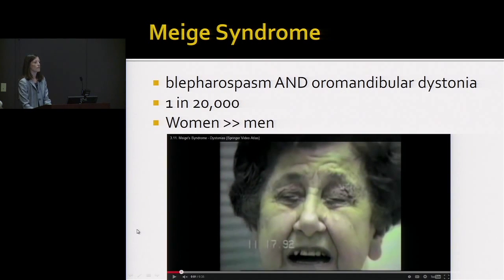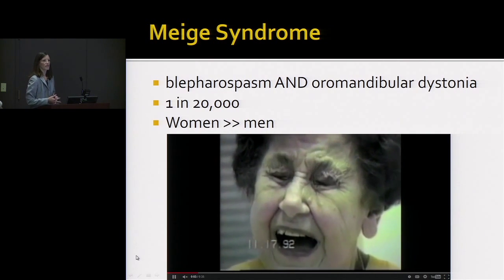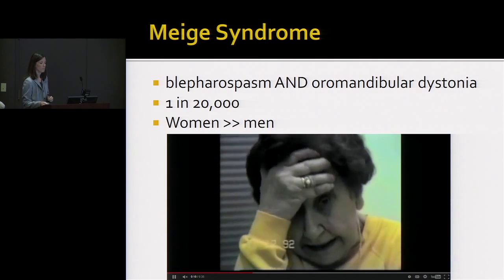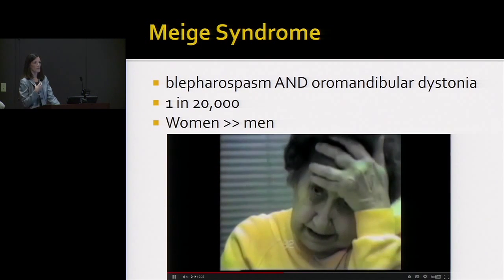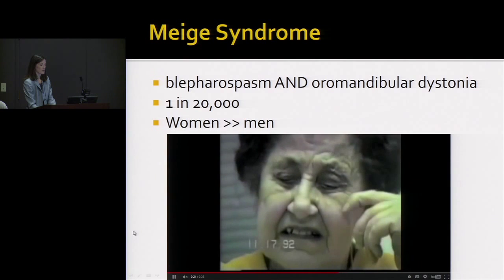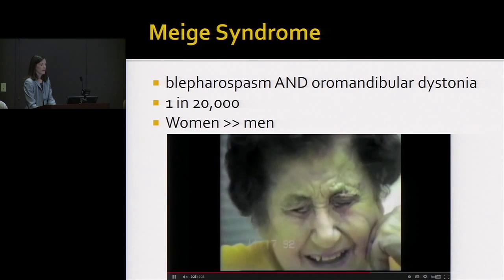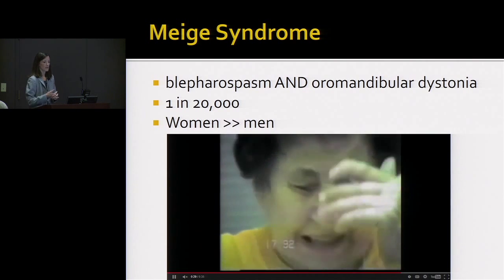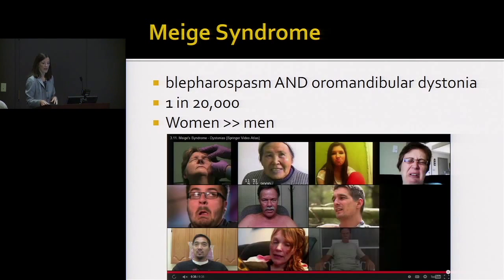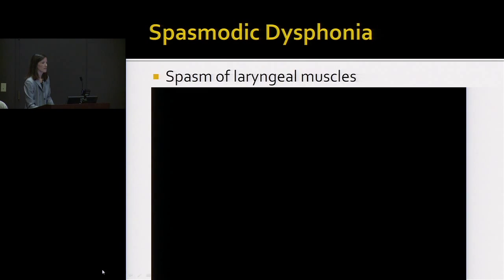If you combine blepharospasm and oromandibular dystonia, you get something called Meige syndrome. Dr. Meige didn't actually have this, so there's some controversy over calling it that, but it affects about one in 20,000 people — women again more than men. Sometimes there can be cervical dystonia along with it, so head pulling forward is also part of that dystonia. An article from the 1800s first thought that the grimacing around the mouth was just an attempt to open the eyes — we learned later that those are all abnormal movements too.